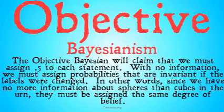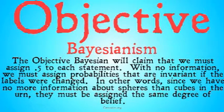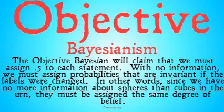Objective Bayesians, on the other hand, will claim that we must assign a 0.5 degree of belief to each statement. With no information, we must assign probabilities that are invariant if the labels were changed. Since we have no more information about spheres than cubes in the urn, we must assign them the same degrees of belief — because we could switch the words 'sphere' and 'cube' in our information and our information wouldn't change, we need to assign them the same degree of belief.